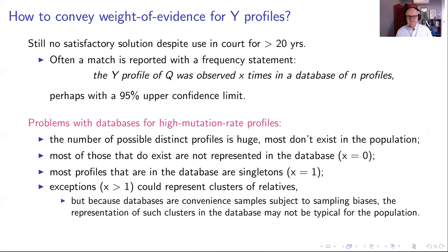How do we convey the weight of evidence for a Y profile match? They've been used in court for over 20 years and we still don't really have a good answer. The most common approach is reporting that the Y profile of Q was observed X times in a database of N profiles. Some give a 95% confidence limit, which makes the answer a little bit more generous to the defense, but doesn't really solve a lot of fundamental problems.